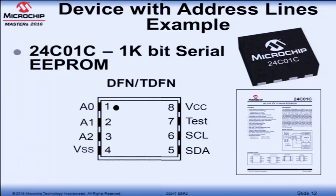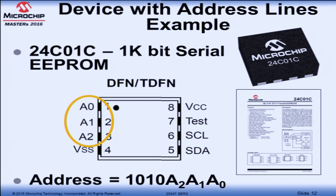Here's an example of a device with a variable slave address because it has A0, A1, and A2 — the EEPROM. The address for this device would be 1010, which is fixed for all EEPROMs, and then the values of A2, A1, and A0. If your address line is pulled up to VDD, those values will be one; if pulled to ground, then zero.